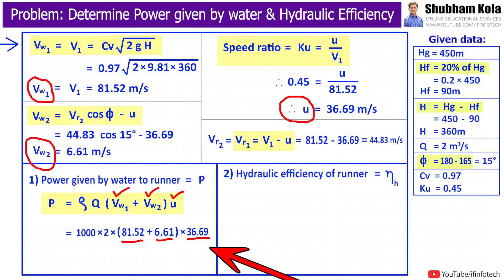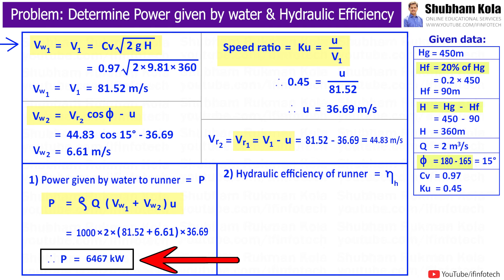Now we have all the values in order to calculate power, and density of water is 1000. Therefore, by calculating this, we will get power at 6467 kW.